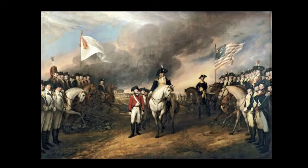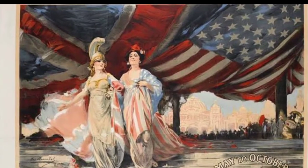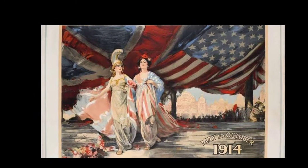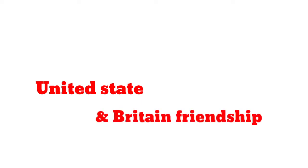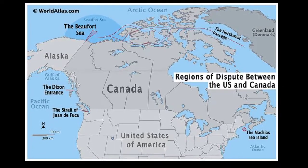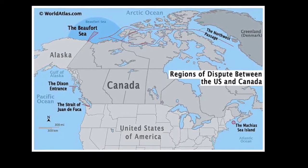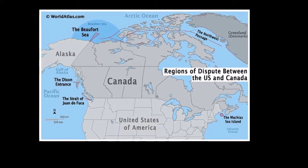The war was concluded in 1814 by the Treaty of Ghent. The treaty resolved none of the issues for which the United States had fought, but it created a framework for future friendly relations between the United States and Great Britain. In the following decades, the two nations quarreled about the Canadian boundary, but settled the disputes by negotiation.